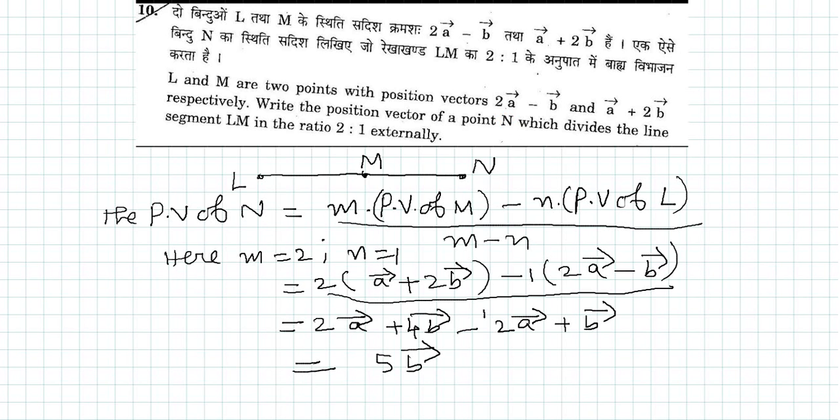Now let us draw the line segment LM like this. N is the point which divides LM externally. That is why the point N is at the extension of LM, and this N divides LM in the ratio...